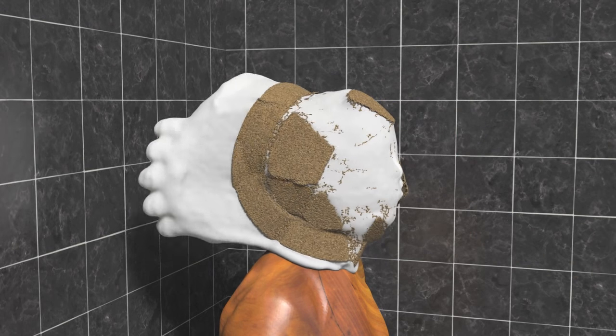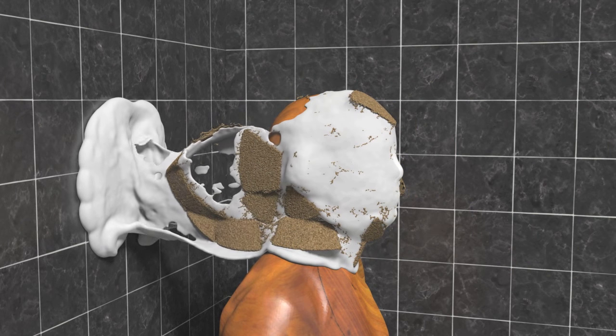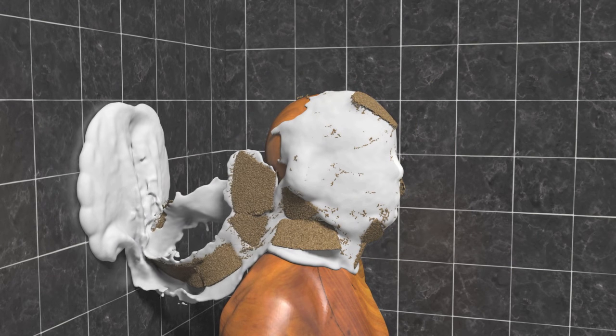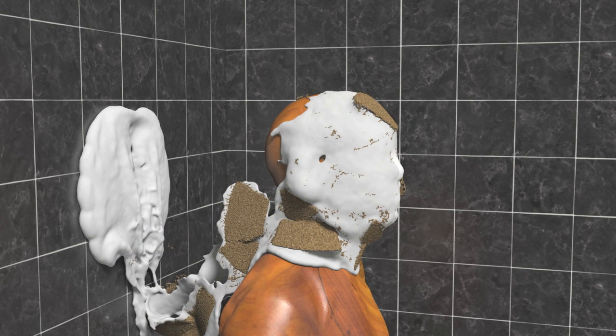We throw a whipped cream pie at a 3D scanned human model. The method captures the fracture behavior of the crust and the splitting and merging behavior of the cream.